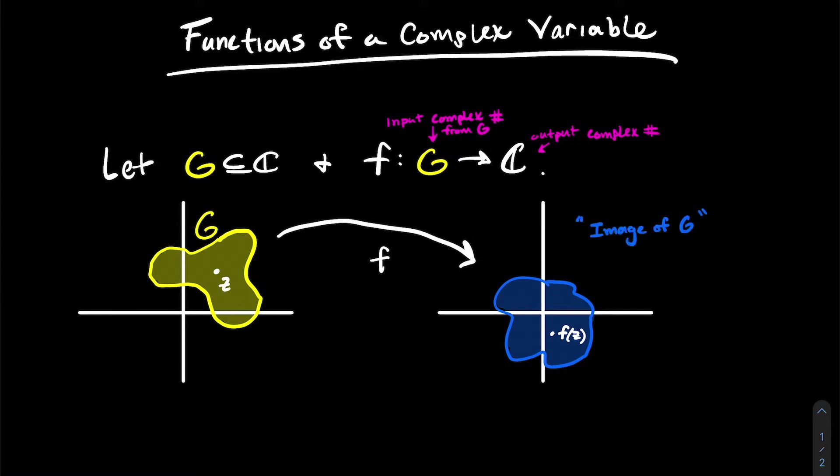And so that blue set gets a name also. We'll refer to that as the image of G or the image of G under f. It gets its own notation. We usually refer to it as f of G, so like f of a set.